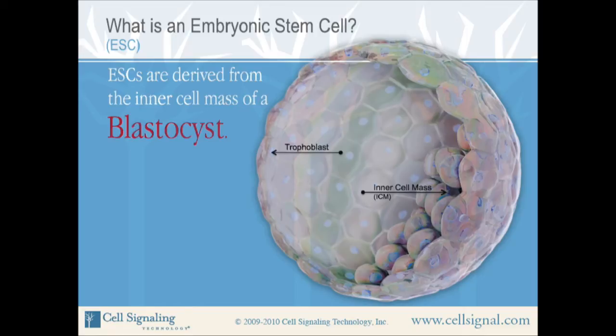Cells of the trophoblast later develop into the placenta and regulate implantation of the embryo. Cells of the inner cell mass are called embryonic stem cells and later develop into the new organism.